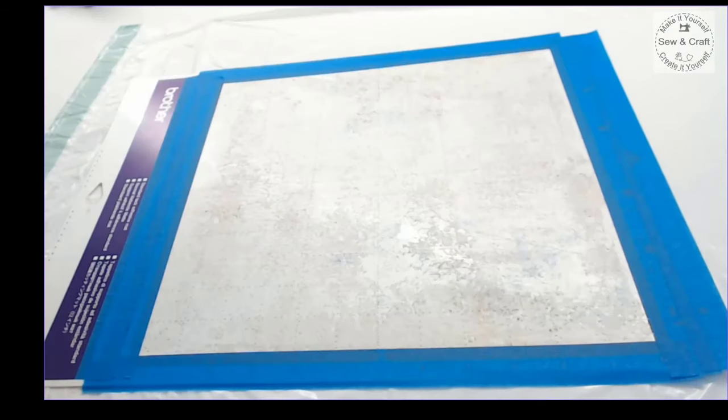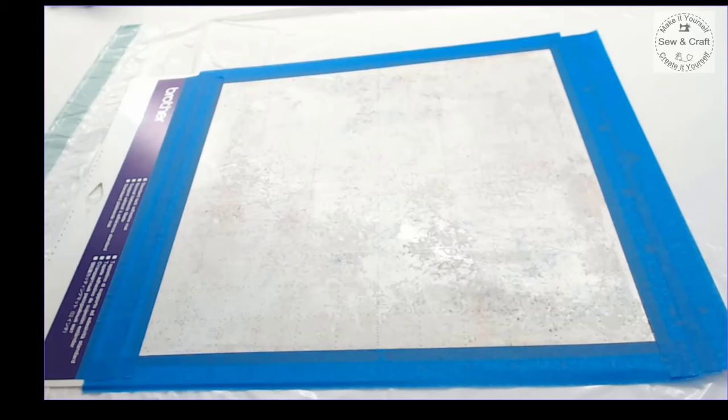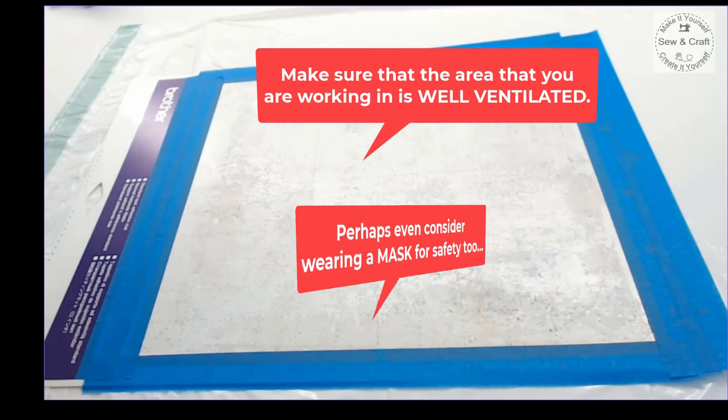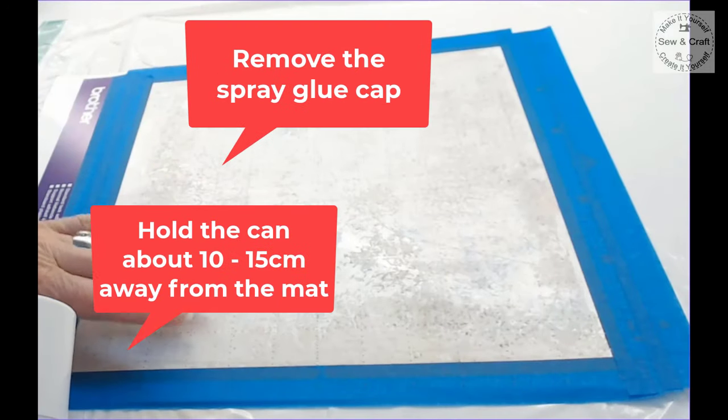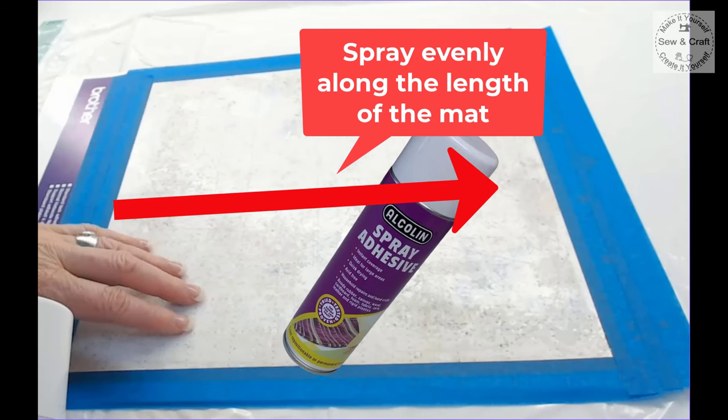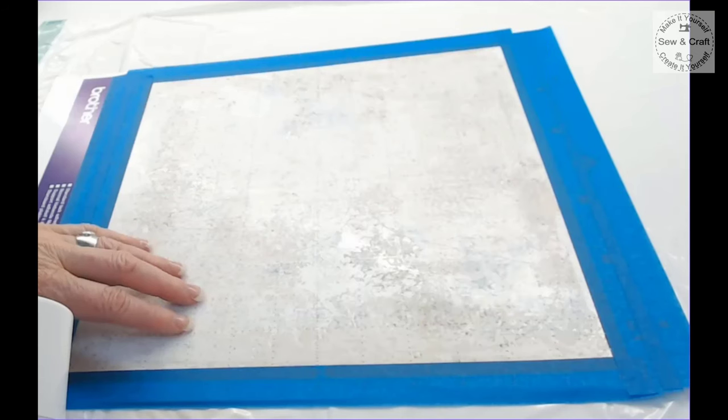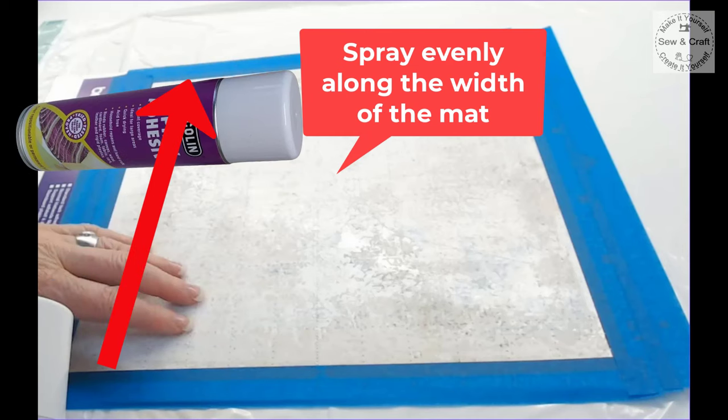Now we can prepare to start spraying our mat, but please make sure that the scan and cut machine is completely away from where you are going to be spraying. Make sure that the area that you're working in is well ventilated and perhaps even consider wearing a mask for safety too. Remove the glue cap and hold the can about 10 to 15 centimeters away from the mat. You're going to spray evenly along the length of the mat and then do the same but spray evenly along the width of the mat.